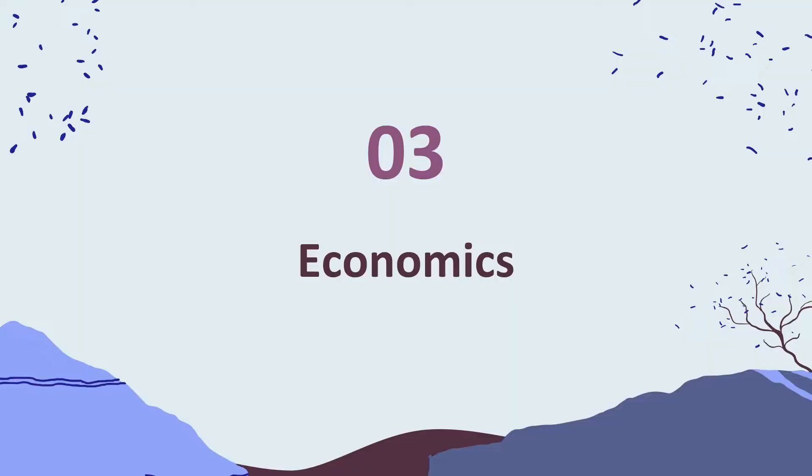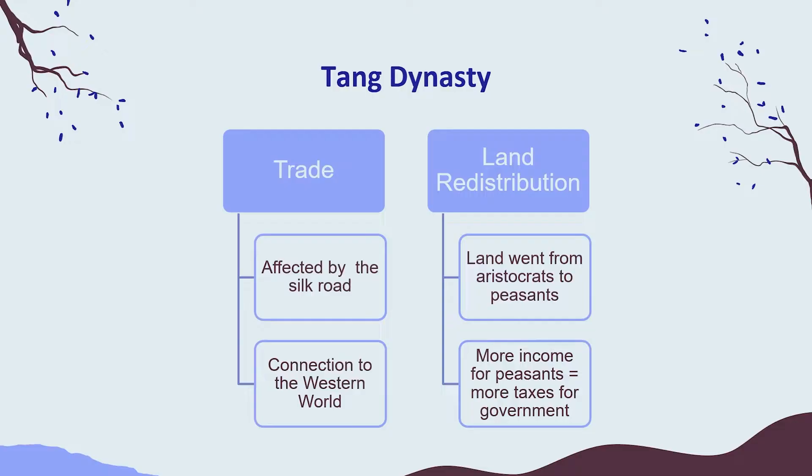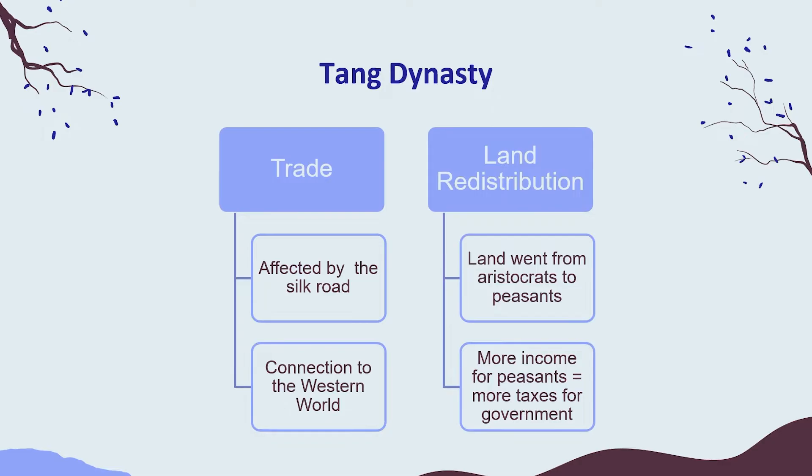The third thing we're going to talk about today is the economics of the two dynasties. Starting with the Tang dynasty, one thing they really prioritized was trade, and they were essentially affected by the Silk Road — their connection to the western world — which created even more profits. The second thing that helped their economy was land redistribution, where land went from the aristocrats to the peasants, creating more income for the peasants and more tax revenue for the government.